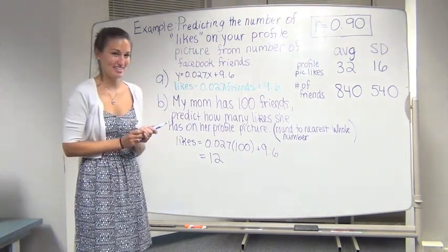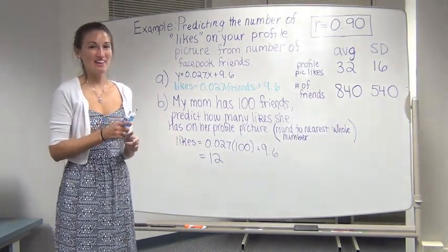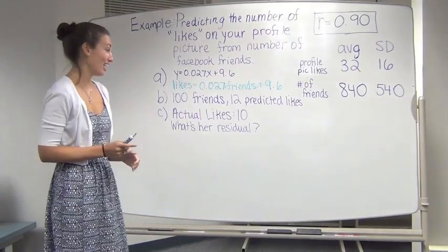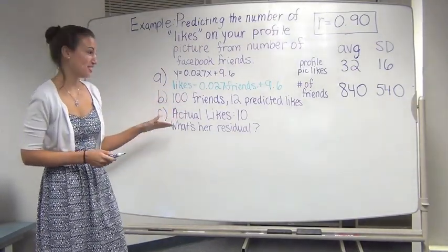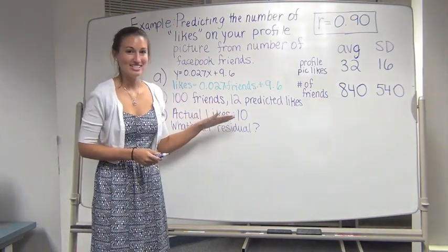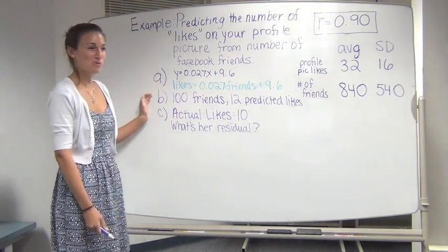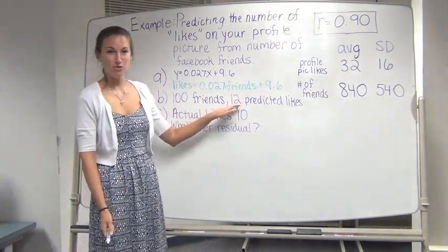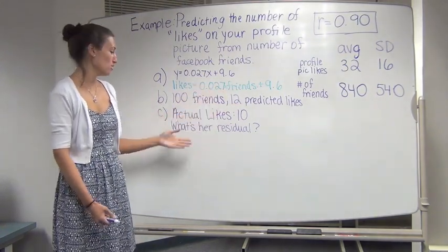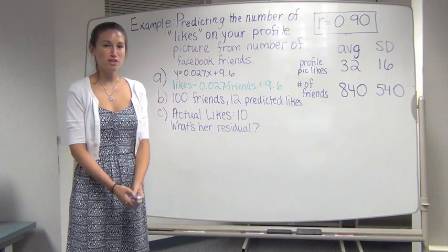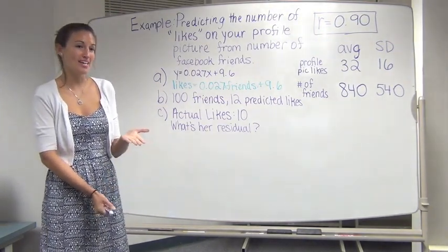Any other questions? How many likes did your mother really have? Well, that's what we're going to look at next. Okay, so hold on a minute. I have to go check her Facebook. So I'm back and I just checked my mom's Facebook and she does have 100 friends, but she actually only has 10 likes on her profile picture. And if you can remember from part B, we predicted that she would have 12 likes. So if she actually only has 10 and we predicted 12, what's her residual, otherwise known as her prediction error, like how far off our prediction was?